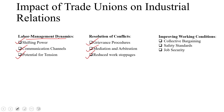Regarding working conditions, collective bargaining allows unions to negotiate wages, benefits, and working hours. Unions often advocate for stricter safety regulations, creating a safer work environment. Finally, unions negotiate for job security provisions such as seniority-based layoff procedures or limitations on outsourcing, offering workers greater job security.